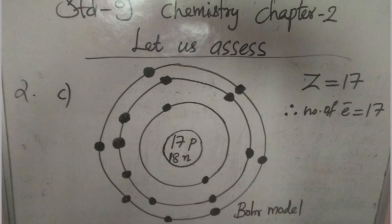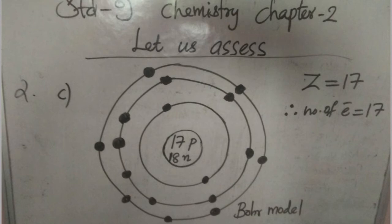We know that the nucleus consists of protons and neutrons. In this case, there are 17 protons and 18 neutrons. The electronic configuration is 2, 8, 7 — that means 2 electrons in the K shell, 8 electrons in the L shell, and 7 electrons in the M shell. Therefore, this is the Bohr model of the given element.